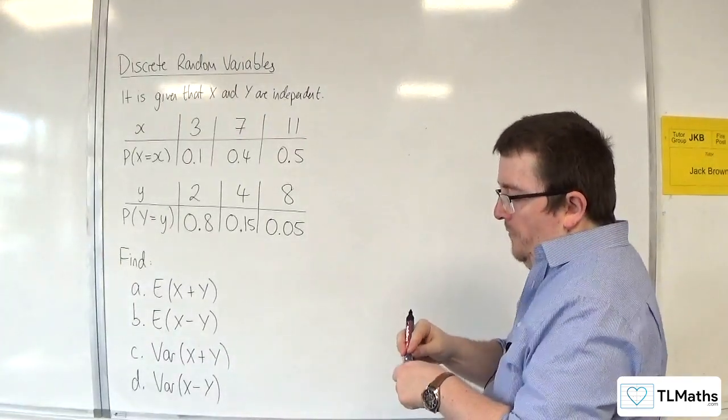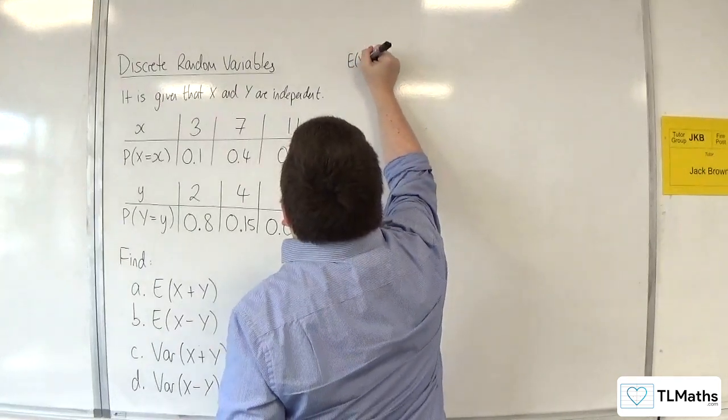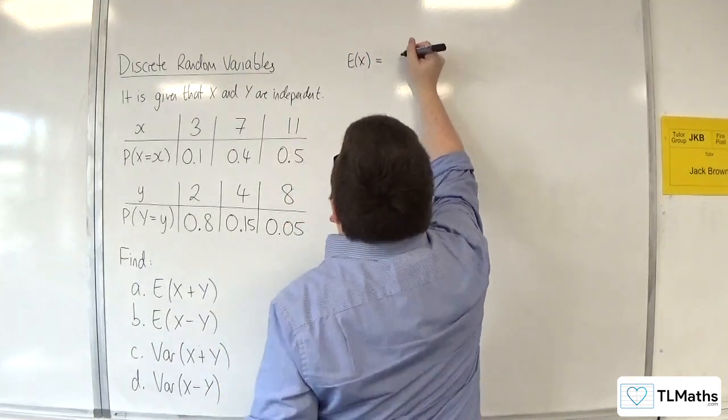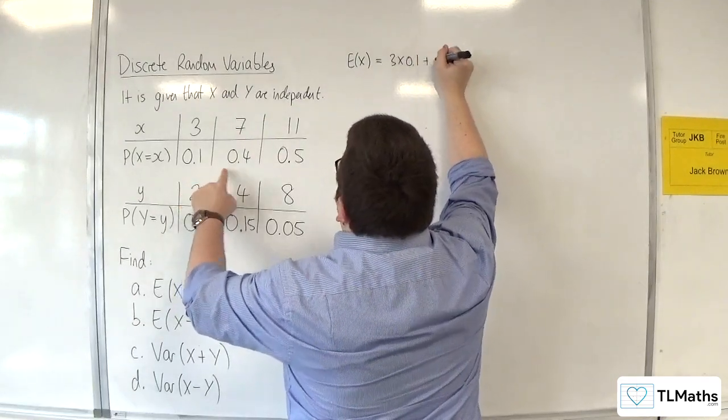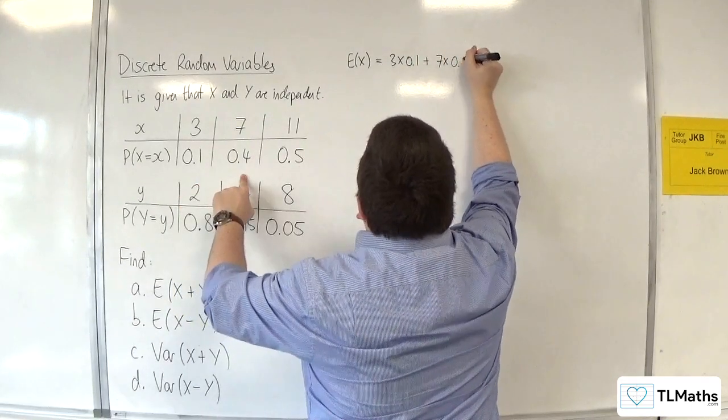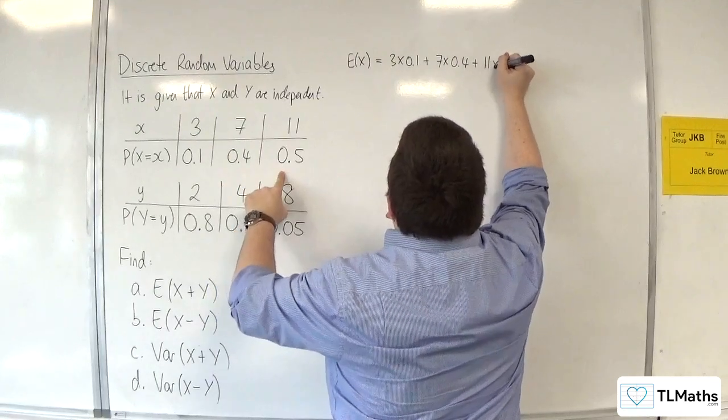I'm going to start off by finding E of X. So E of X is equal to 3 times 0.1 plus 7 times 0.4 plus 11 times 0.5.